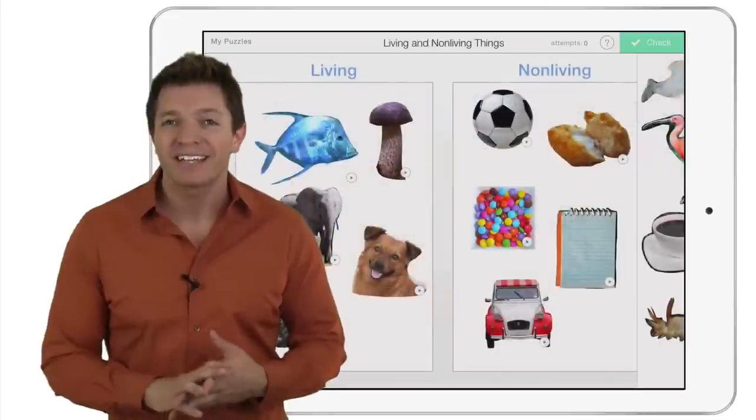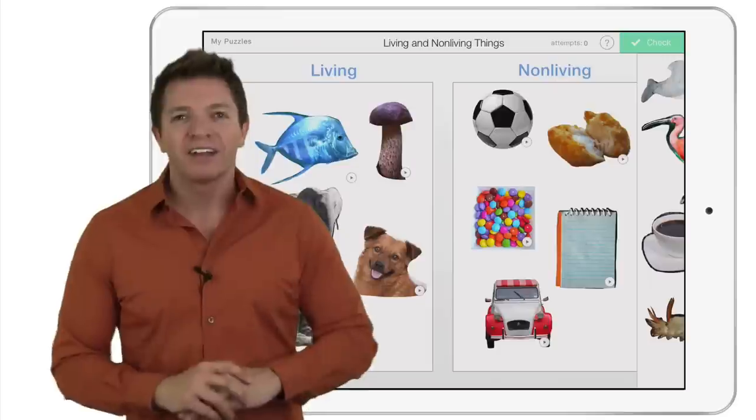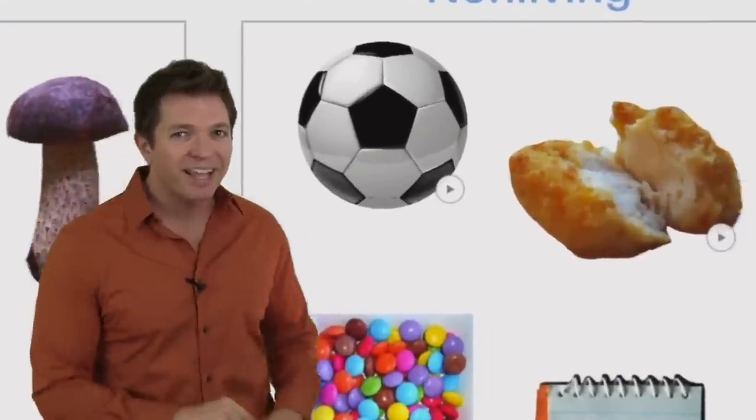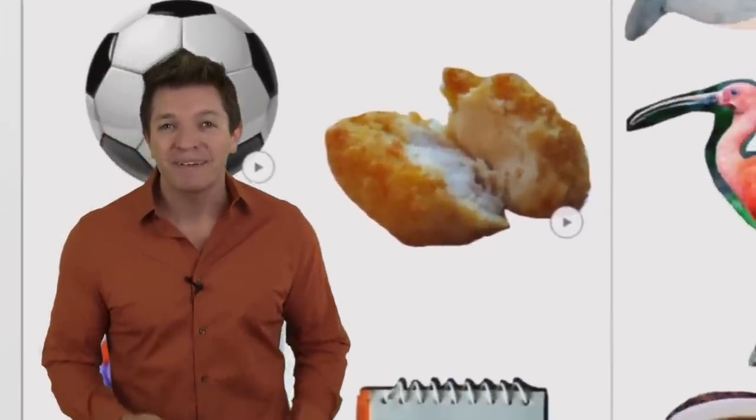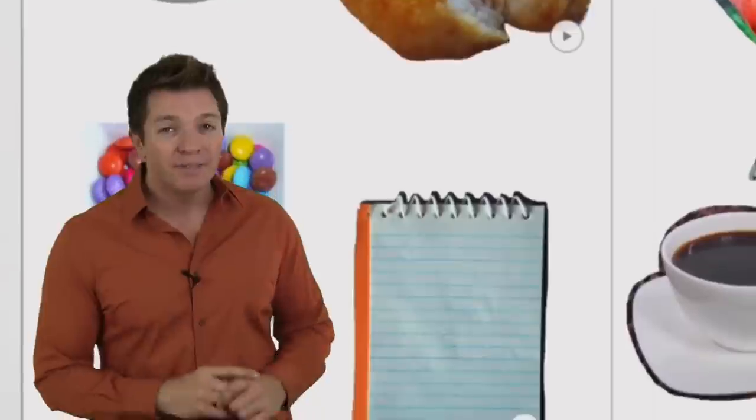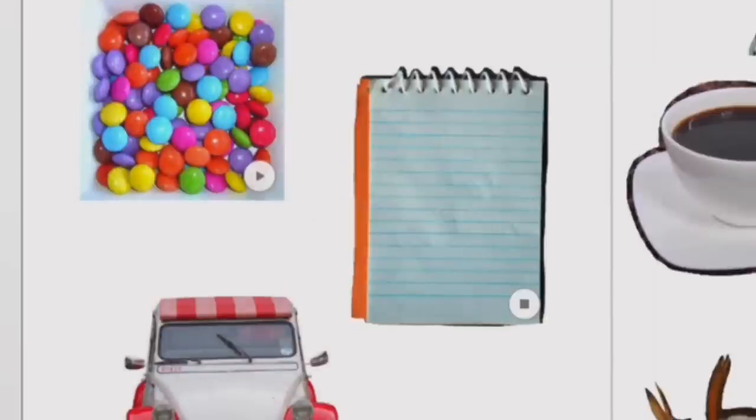Stickers don't have to be text. They can be images or drawings. This puzzle's stickers are all images. And do you see that little triangle on each sticker? Those are play buttons. Stickers can have recorded audio. In this puzzle, if you click the play button, you hear what the sticker is a picture of. Notebook.